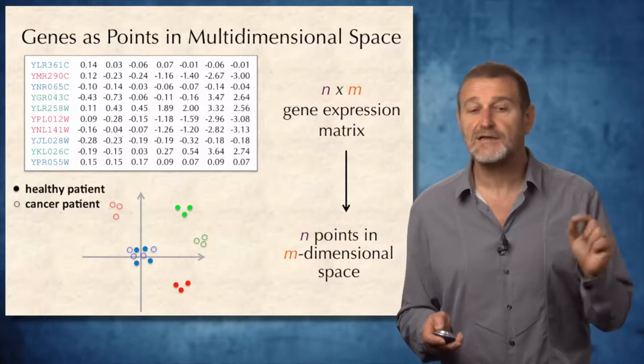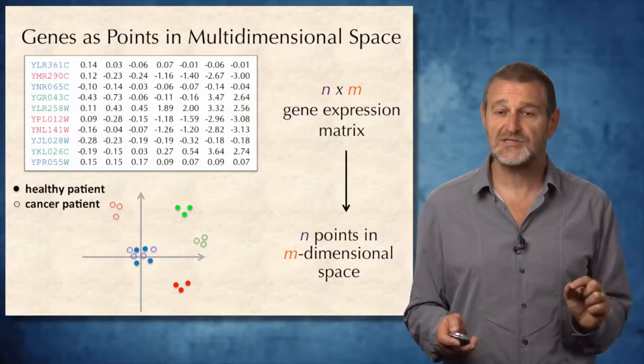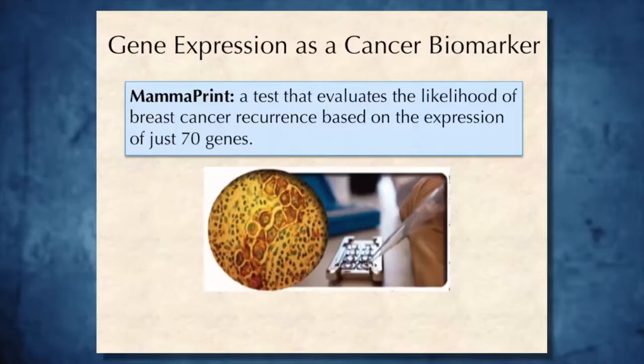And thus, potentially, green genes or red genes represent potential, I emphasize potential, cancer biomarkers.